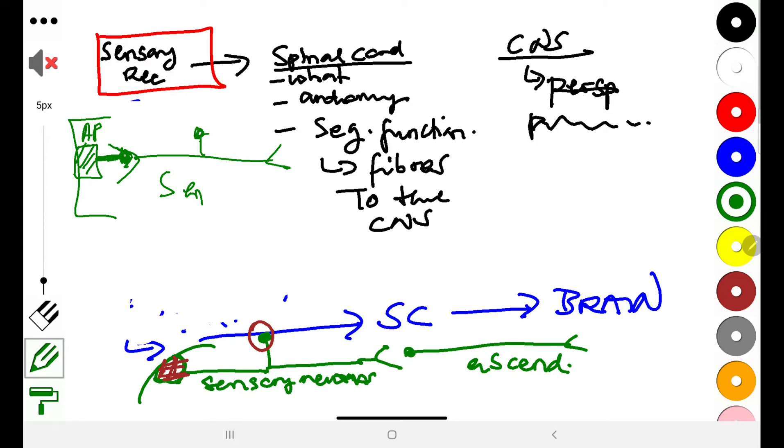The sensory neuron has two parts. The part that goes to the spinal cord is known as the central part, and the one that goes to the body or to the receptor organ is the peripheral part. This will take the action potentials this way. You have initiation, and then it will propagate the action potential into the sensory neuron, which will then go to the spinal cord and continue with the ascension to the brain areas.